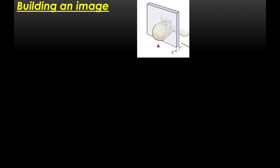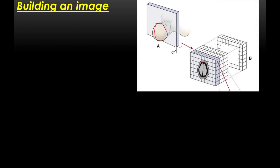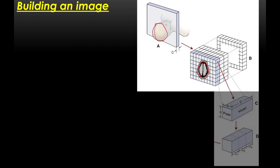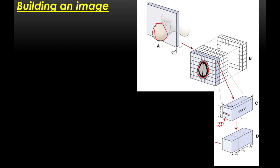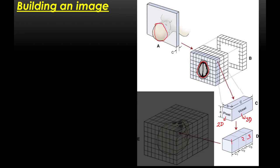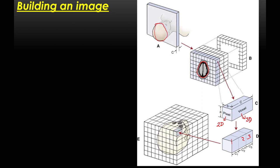Like physicists love to do, we're going to simplify things. We take a slice of the patient's head and break that slice up into hundreds and hundreds of little cubes. A quick note on terminology: a pixel is a two-dimensional area of space, while a voxel is a three-dimensional area of space. Each of these little cubes is a voxel. To image a patient we need hundreds of thousands or even millions of voxels — the smaller the voxels, the greater the resolution.